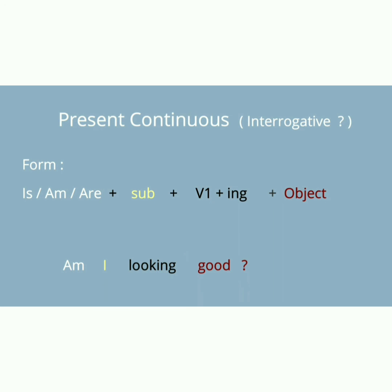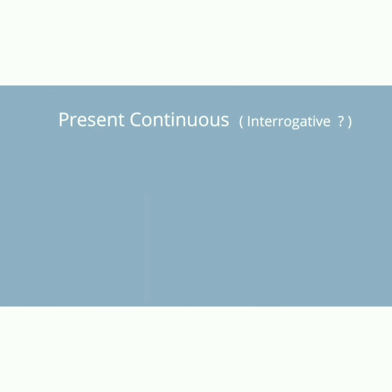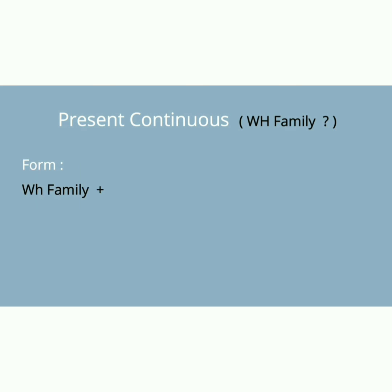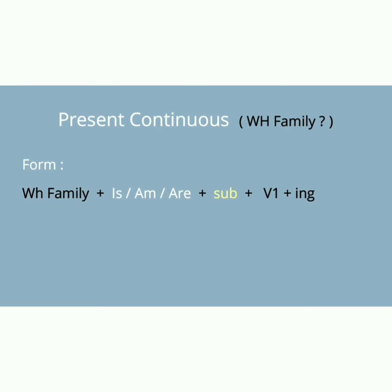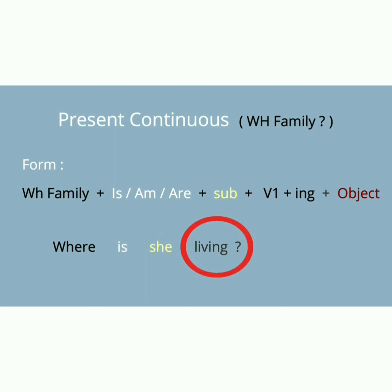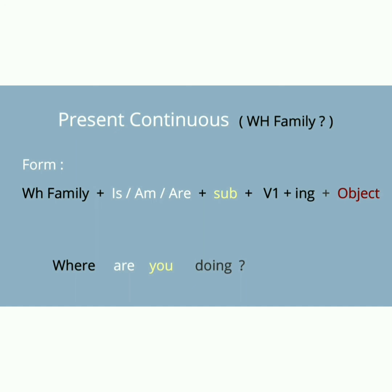Present continuous WH family interrogative: WH family word + is/am/are + subject + verb first form + ing + object۔ جیسے: Where is she living? — 'where' ہمارا WH family word، پھر is، پھر subject، پھر living (first form + ing)۔ Plural میں: Where are you living?